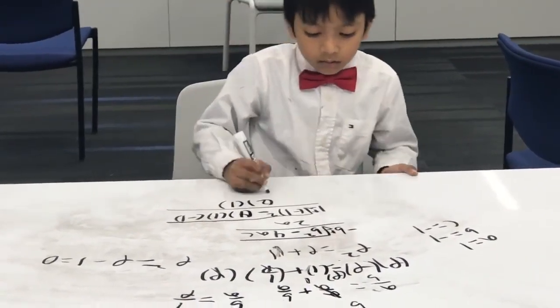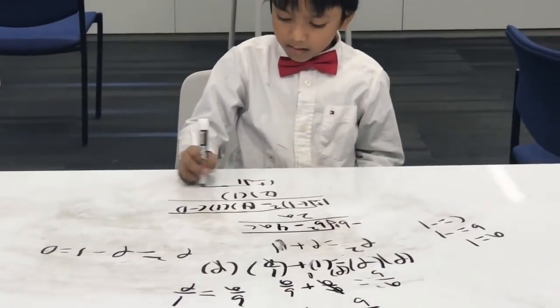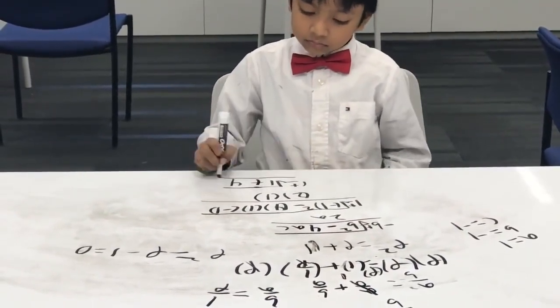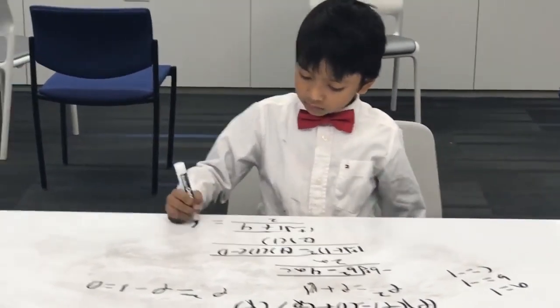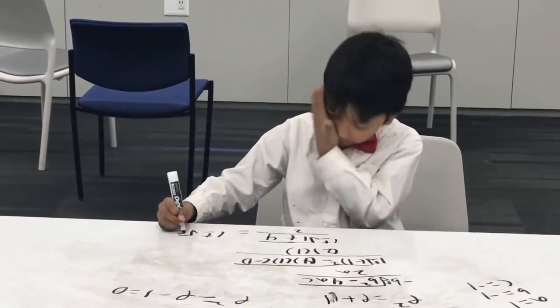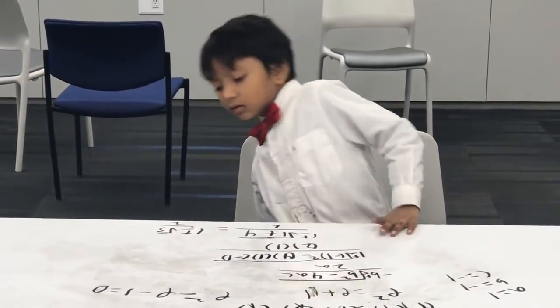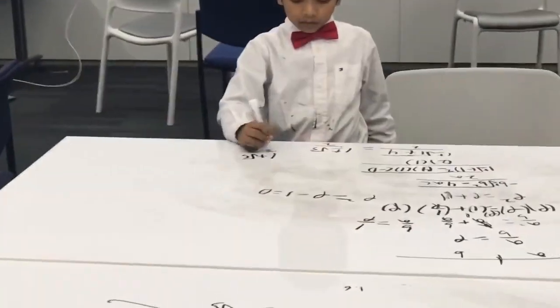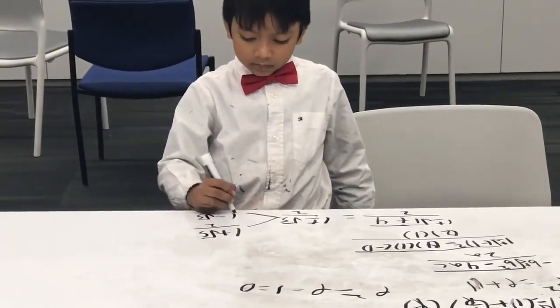1 plus minus square root of 1 to minus minus plus 4 over 2. So it will be rather 1 plus square root of 5 over 2 or 1 minus square root of 5 over 2.